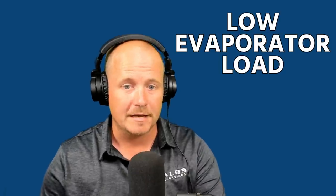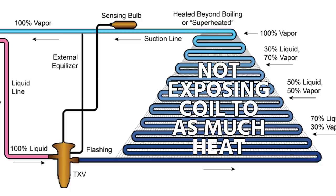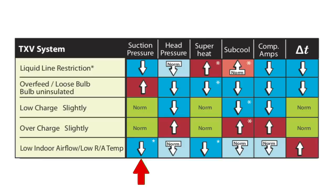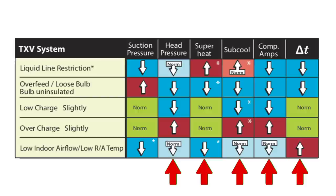Low evaporator load means you're not exposing that evaporator coil to as much heat, generally due to low airflow moving over that indoor coil. You're going to see low suction pressure, low to normal head pressure, low superheat, low to normal subcool, low compressor amps, and high delta T. Those are your primary indications of low indoor airflow. Hopefully you found this helpful — there's more coming in this series, so stay tuned.